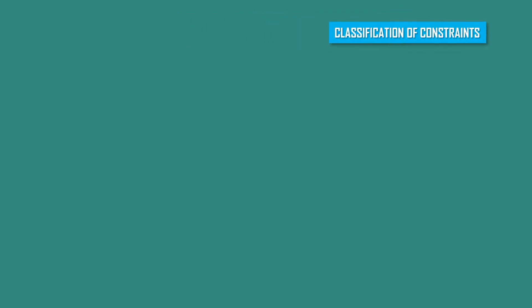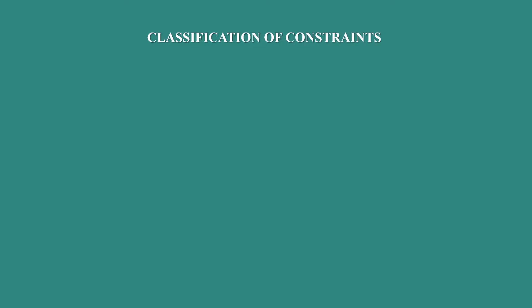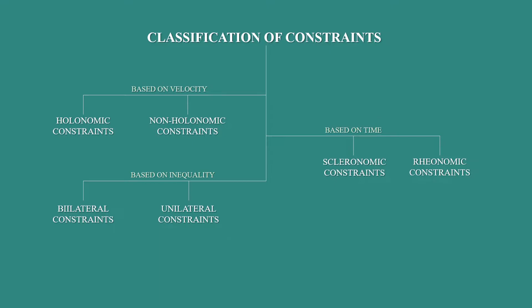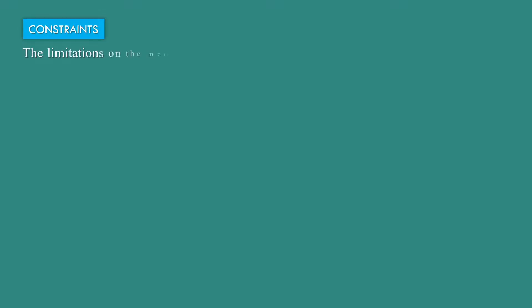Classification of constraints. Constraints are classified based on four criteria: based on velocity, constraints are divided into holonomic and non-holonomic constraints; based on time, they are divided into scleronomic and rheonomic constraints; based on inequality, they are divided into bilateral and unilateral constraints; and based on energy, they are divided into conservative and dissipative constraints.